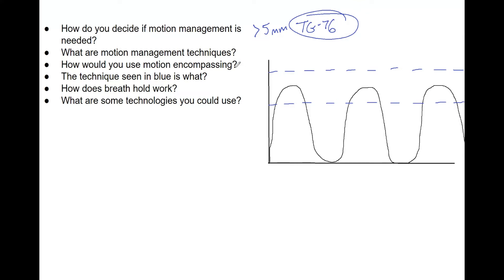That's why we're going to hop into motion encompassing, where in sim you take a slow CT that averages a full inhale and full exhale. You could also just take a 4D CT. That is how you would use motion encompassing.